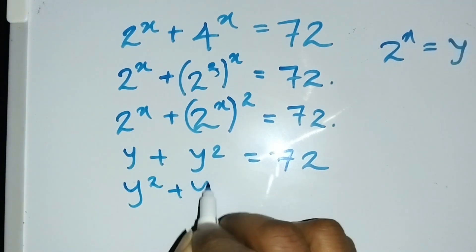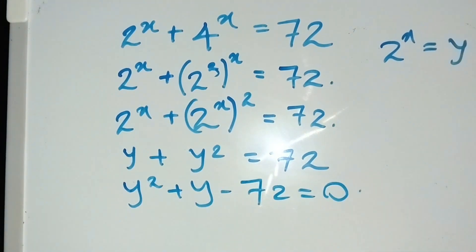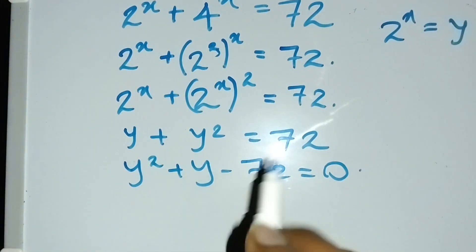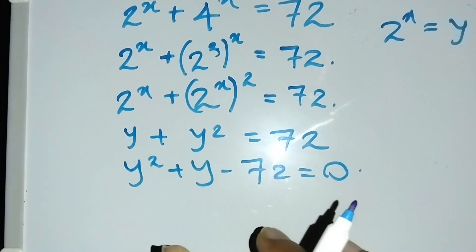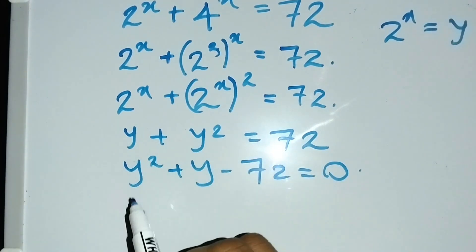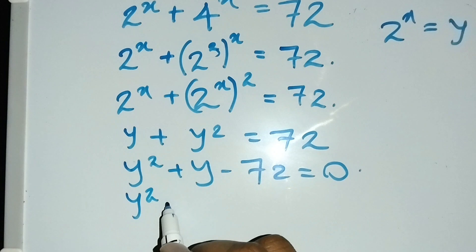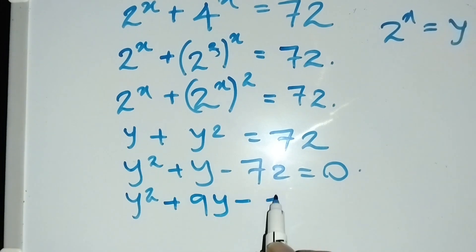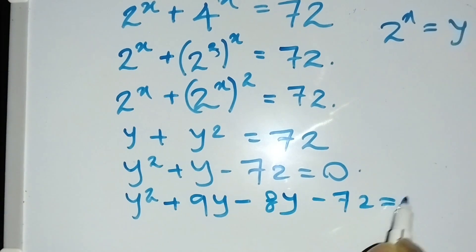So I have y squared plus y minus 72 equals 0. In the next step, I can rewrite this as y squared plus 9y minus 8y minus 72 equals 0.